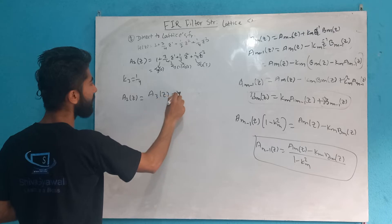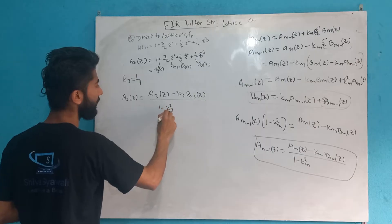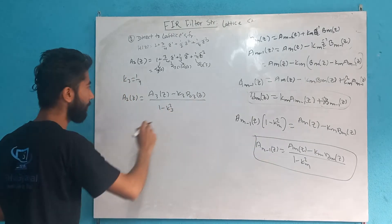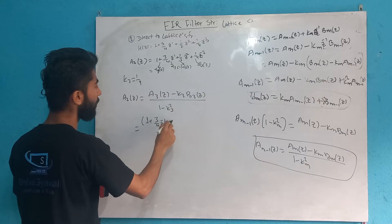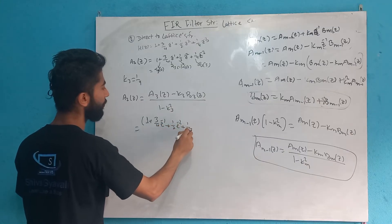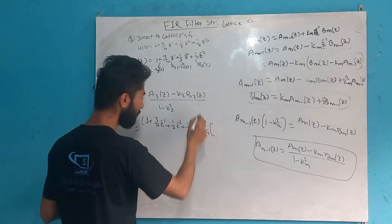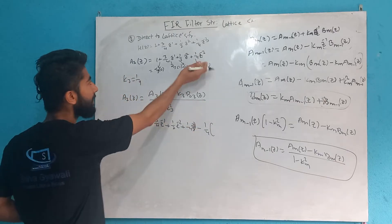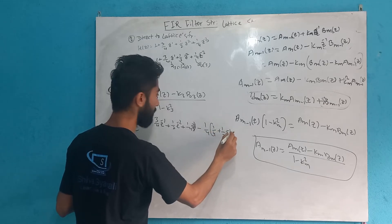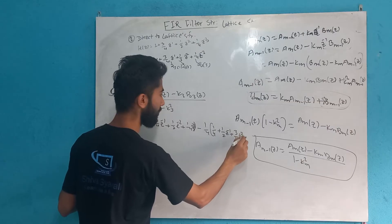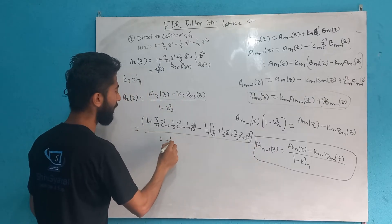We apply the formula: A_{m-1}(z) = [A_3(z) minus k_3 * B_3(z)] divided by (1 minus k_3^2). A_3(z) is 1 plus (3/4)z^{-1} plus (1/2)z^{-2} plus (1/4)z^{-3}. With k_3 = 1/4, B_3(z) is (1/4) plus (1/2)z^{-1} plus z^{-3}, all divided by (1 minus 1/16).